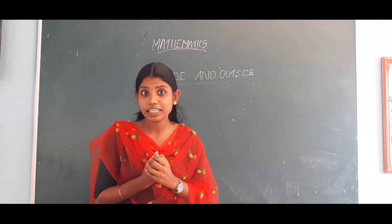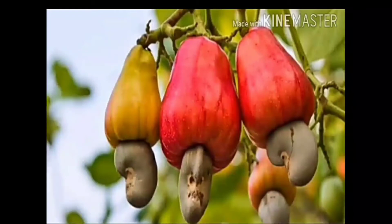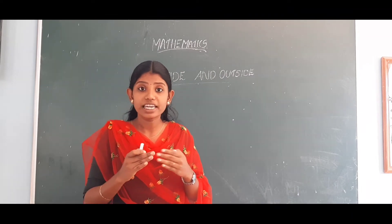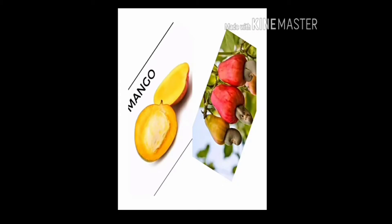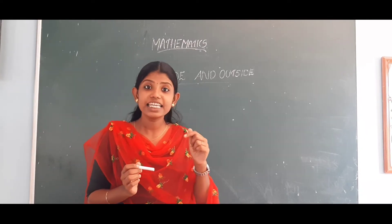Let us move on to the example. Look here. What is this? It is cashew nuts. Cashew nuts grow outside the fruit — it is a dry fruit. The seed of cashew nuts is not inside the fruit; it is outside the fruit. Here cashew nuts grow outside the fruit, whereas the mango seed grows inside the fruit.